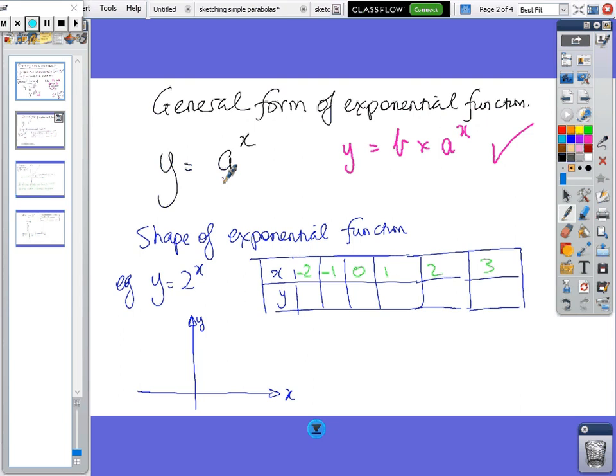So if I've got y equals 2 to the x in a table of values, you just have to use your button that either looks like that on your calculator, or on some calculators it might be x to the y, but I think most of you have that button. If you go 2 to the minus 2, 2 to the minus 1, etc., you should get these values.